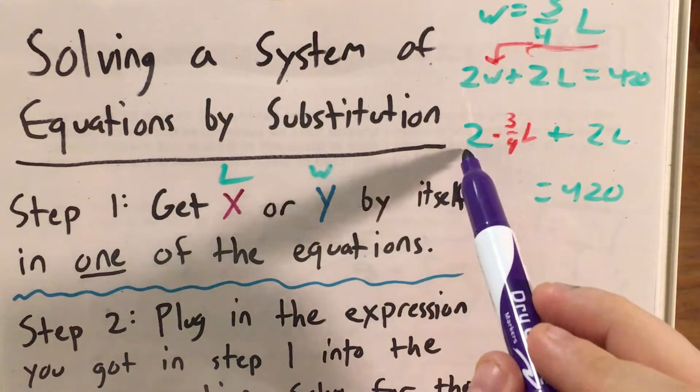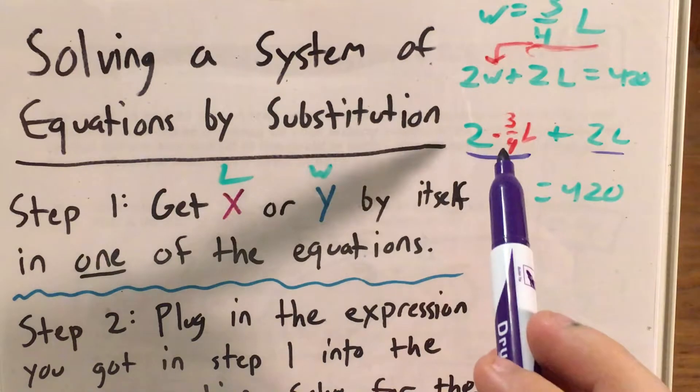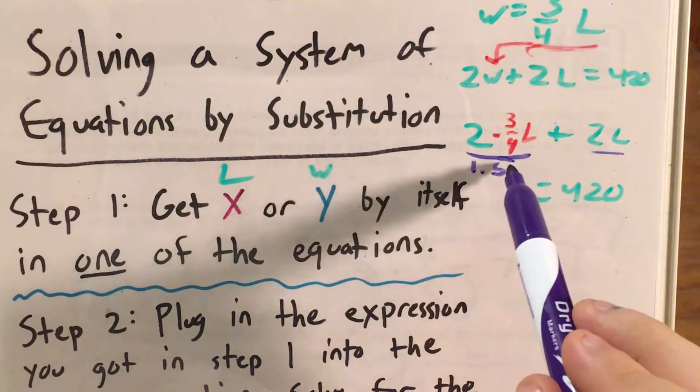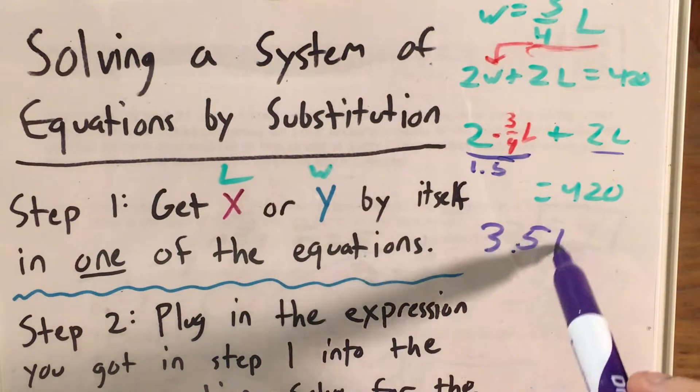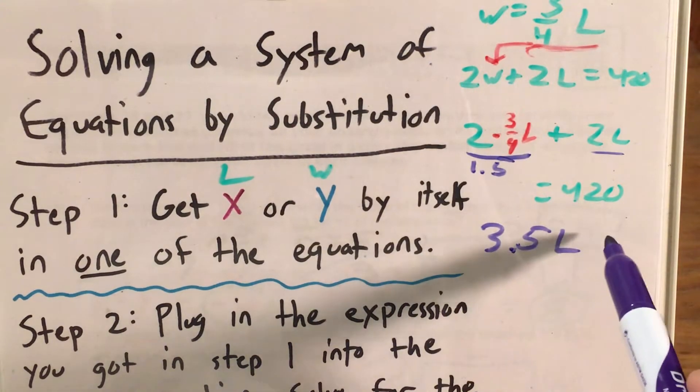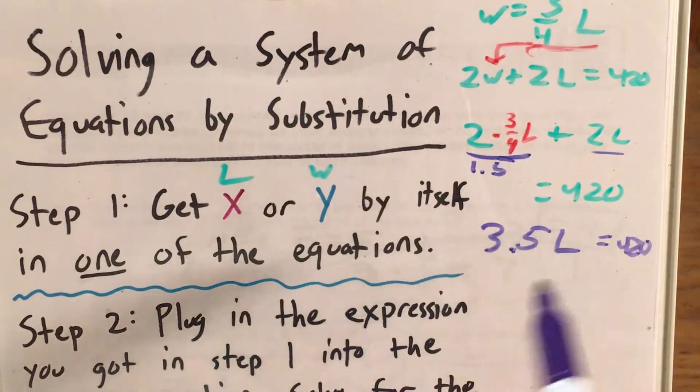All right, so first I need to combine my two like terms. Two times three-fourths is the same thing as one and a half, so one and a half L plus two L gives me three and a half lengths equals 420.